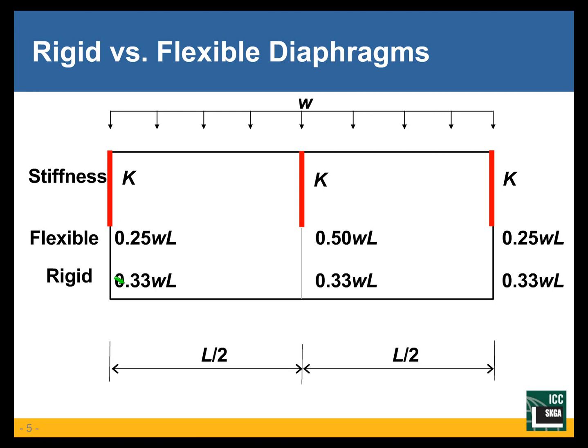Each shear wall will get one-third because we have three shear walls of the same lateral stiffness. If the diaphragm, on the other hand, is flexible, the distribution of WL — the total lateral force — will be in proportion to the tributary areas. The middle wall will get one-half of the total force, and the end walls will get only a quarter, because the middle wall has twice the tributary area of the end walls.